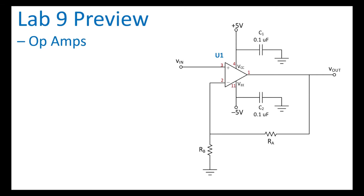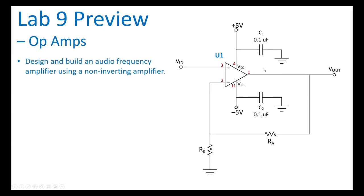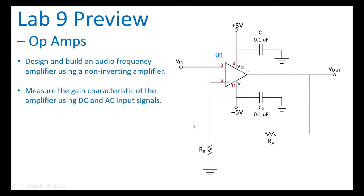I want to give you a preview of this week's lab. You're going to be building an op-amp circuit — a non-inverting amplifier that operates at audio frequencies. You'll use a general-purpose op-amp and measure the gain characteristic using both DC and AC input signals applied to Vin, and measure Vout. You'll notice a couple of capacitors in the schematic. These capacitors are connected to DC power supply voltages and are intended to maintain DC on those pins for the chip.